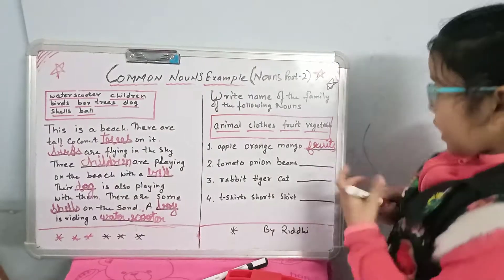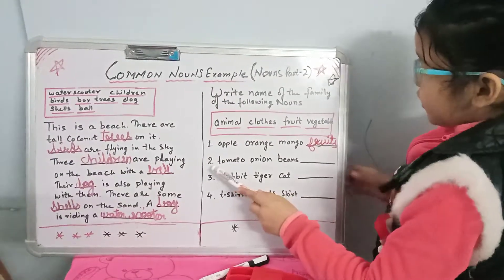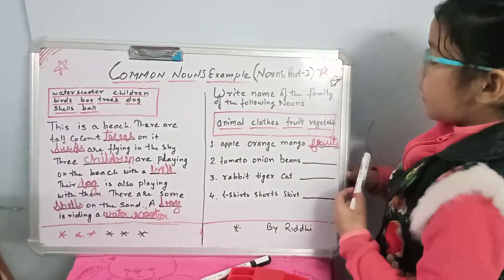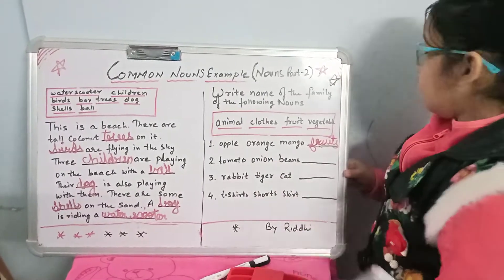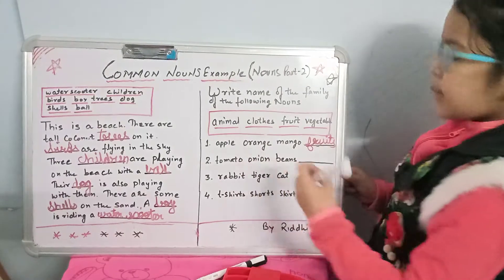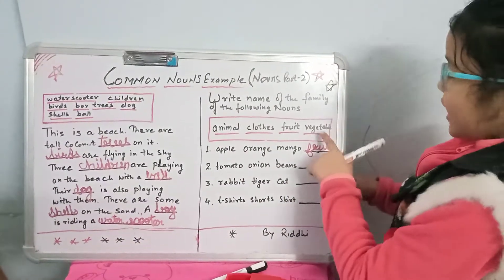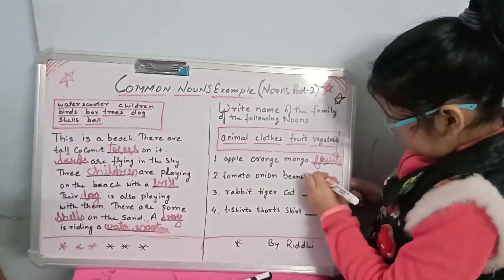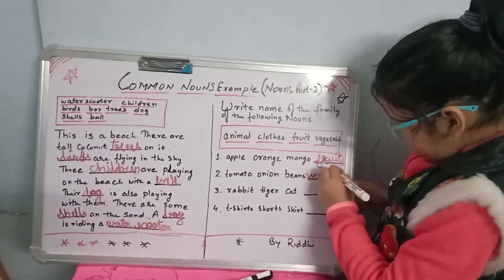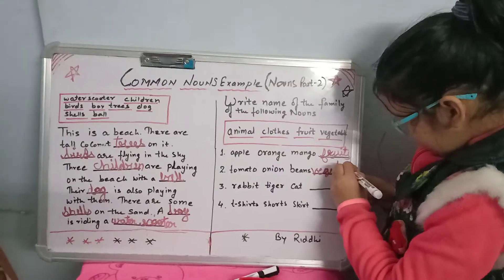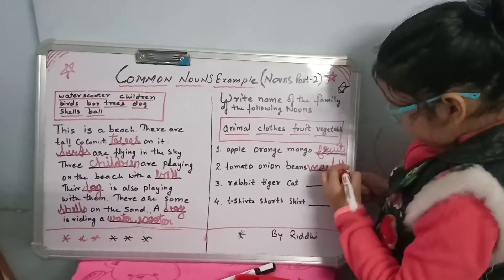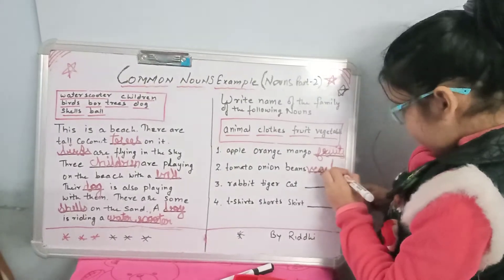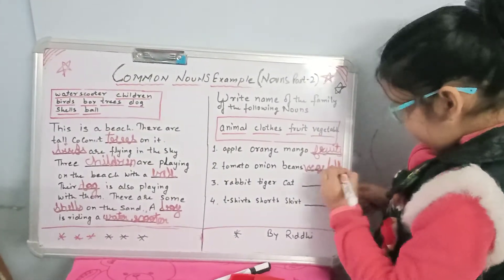The second one is tomato, onion, beans. These are clothes? No. These are animals? No. These are vegetables. Vegetables.